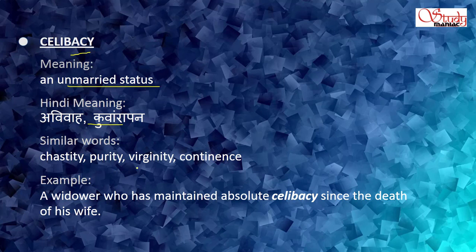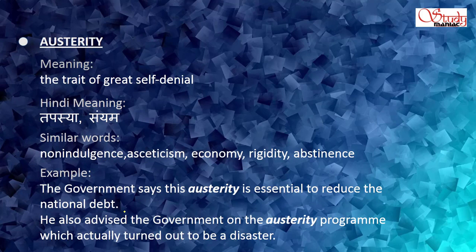Next: celibacy, meaning an unmarried status. Hindi meaning: avivah, brahmacharya. Similar words: chastity, purity, virginity, continence. Example: A widow who has maintained absolute celibacy since the death of his wife.